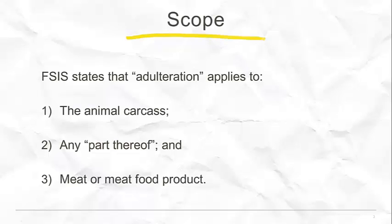The FSIS also looks at the production of meat once it leaves the slaughterhouse. Any of the meat or meat food products are going to fall into this criteria of whether or not it is adulterated. That's a wide range of activities and products, and this definition of adulteration applies in probably a wider circumstance than you may see with the FDA.